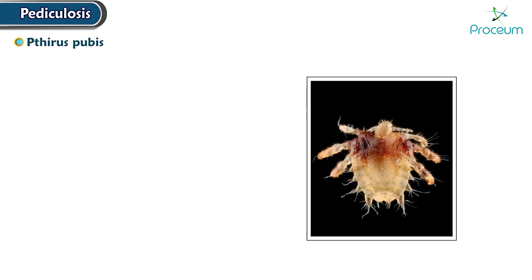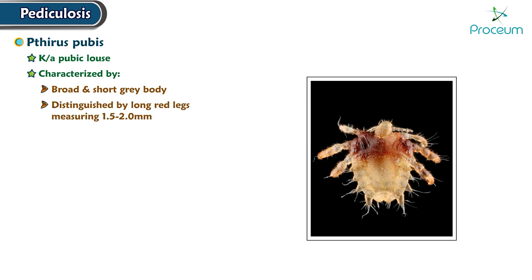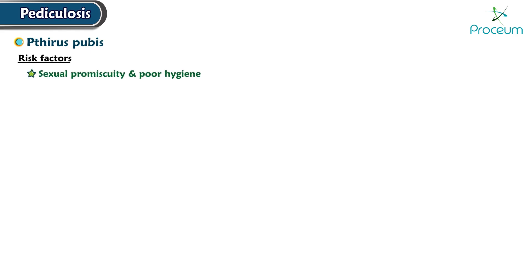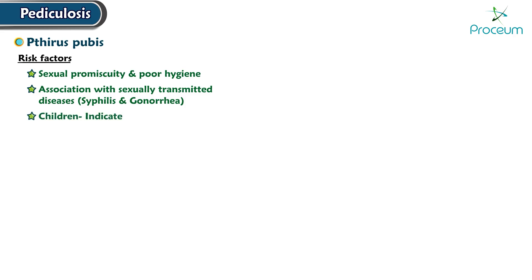Now we'll talk about Phthirus pubis, commonly known as the pubic louse. It has a broad and short gray body and is distinguished by long red legs, measuring 1.5 to 2.0 millimeters. The eggs are affixed to body hair, hatching within a week and reaching adulthood in 2 to 3 weeks. Risk factors include sexual promiscuity, poor hygiene, association with sexually transmitted diseases such as syphilis and gonorrhea, and in children, the presence of pubic lice may indicate sexual abuse or infected parental contact.